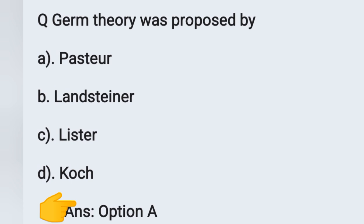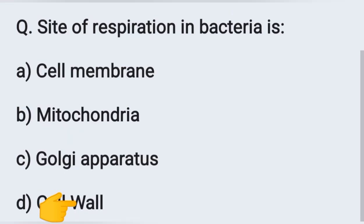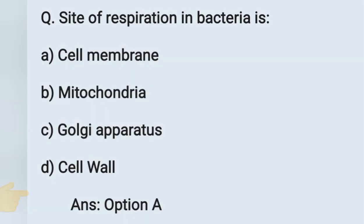The next question: Site of respiration in bacteria is — option A: cell membrane, option B: mitochondria, option C: Golgi apparatus, option D: cell wall. Respiration takes place in bacteria through the cell membrane. Option A is the correct answer.